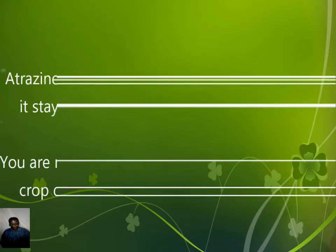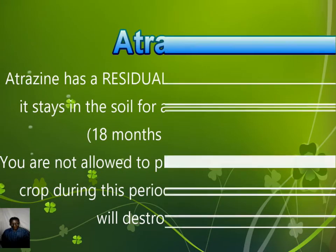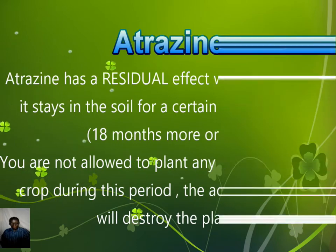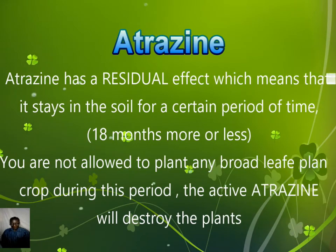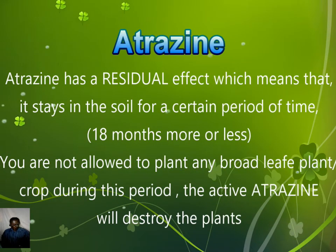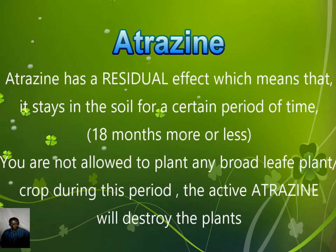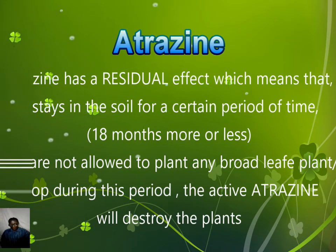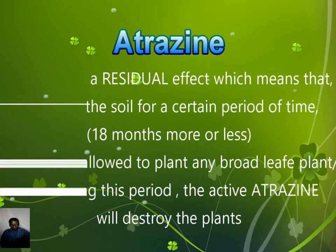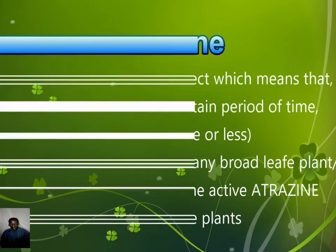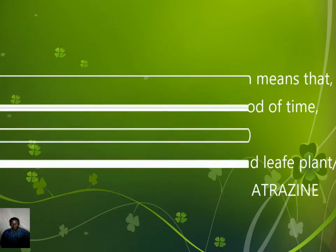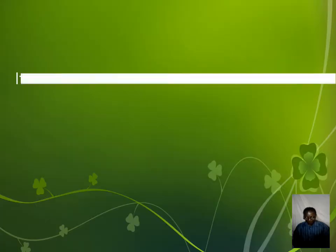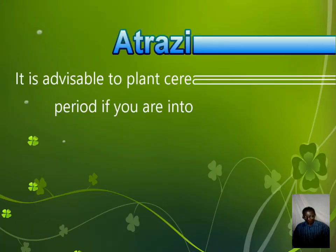Atrazine has got a residual effect. It remains in the soil, as mentioned, because it is taken up by the roots. Some broadleaf plants can be affected if they are grown within the period when Atrazine is still active.